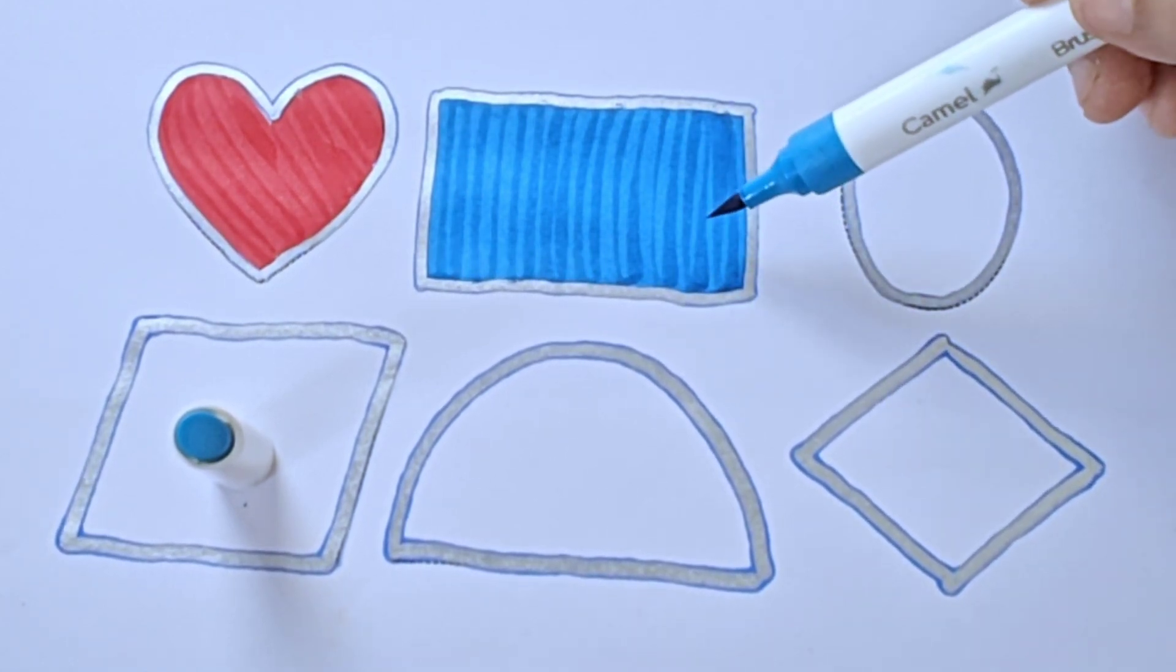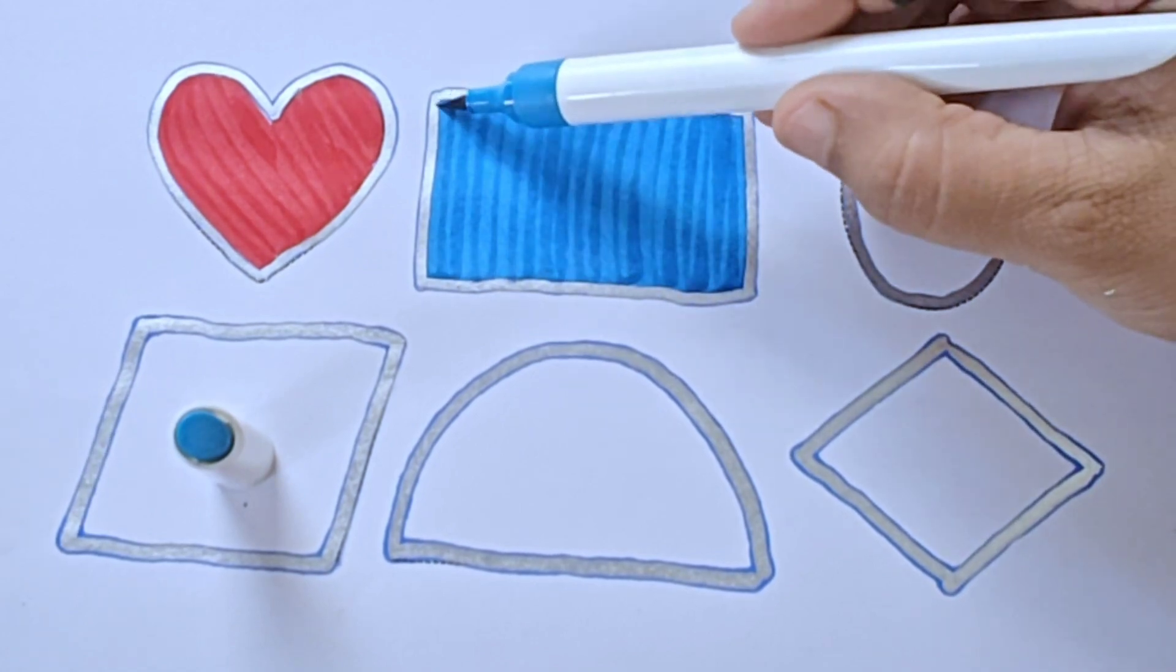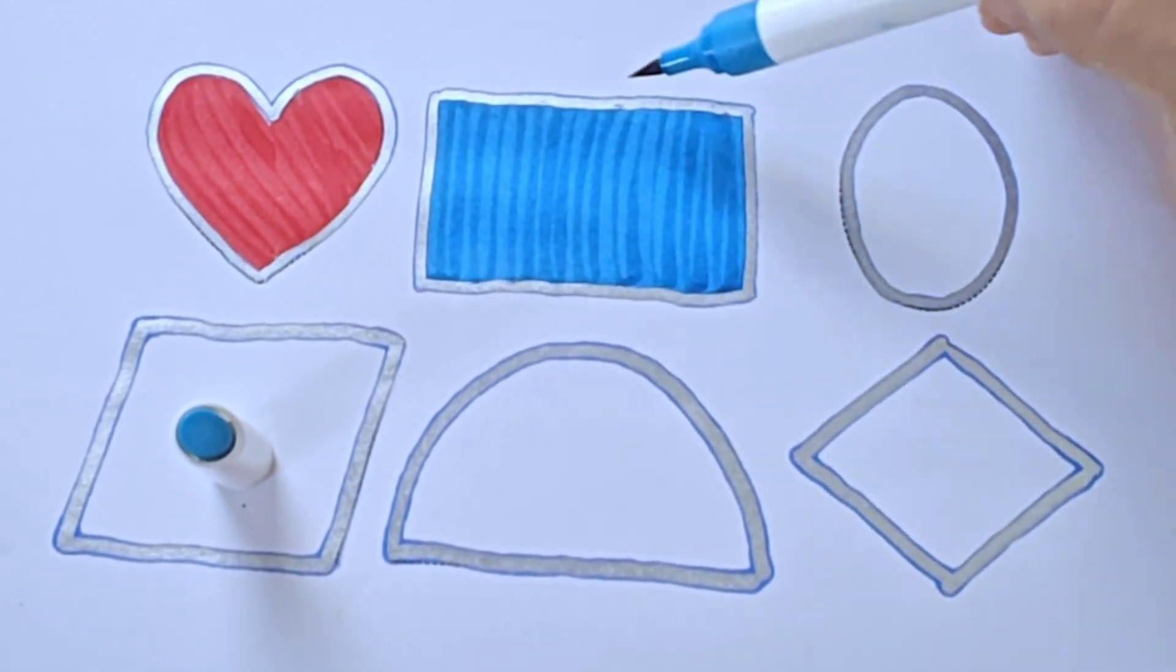It is rectangle, it has four sides: one, two, three, four. Opposite sides are equal.